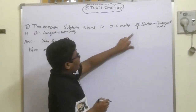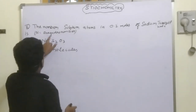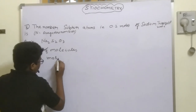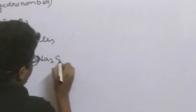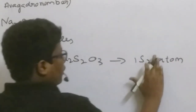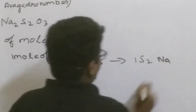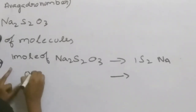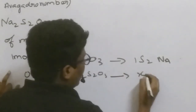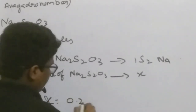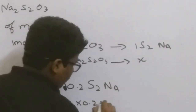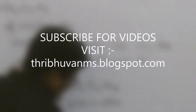The eighth numerical: find the number of sulfur atoms in 0.2 moles of sodium thiosulfate (Na2S2O3). Here, 1 mole of Na2S2O3 has 2 sulfur atoms, meaning 2 times Avogadro's number (Na) sulfur atoms. For 0.2 moles of Na2S2O3, X equals 0.2 times Na. Since the atomicity of sulfur is 2, we get 2 times 0.2 times Na, giving 0.4 Na sulfur atoms.